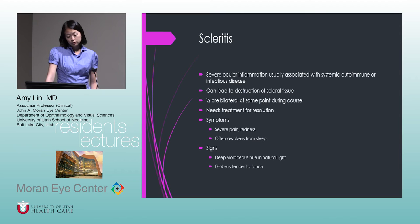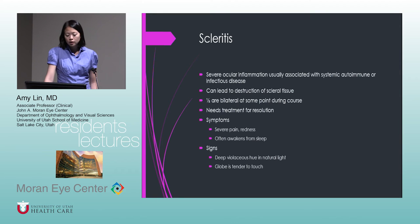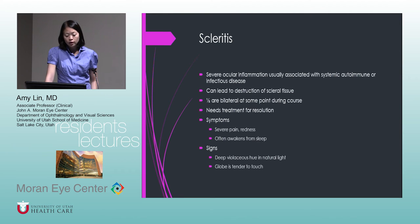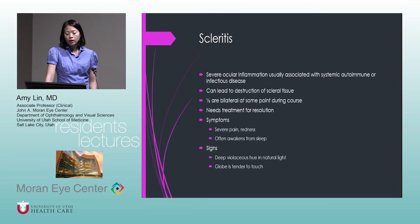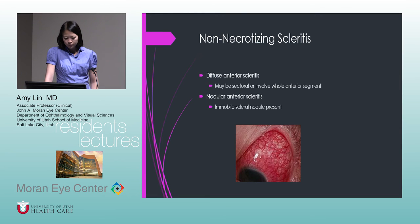Scleritis is severe ocular inflammation with a high association with systemic autoimmune or infectious disease, and it can lead to destruction of scleral tissue. Half of cases of scleritis are bilateral at some point. Unlike episcleritis, scleritis will not get better without treatment. Symptoms are severe pain and redness — pain so severe it often awakens people from sleep. Instead of bright red, there's a purplish, deep violaceous hue in natural light. The globe is very tender to touch.